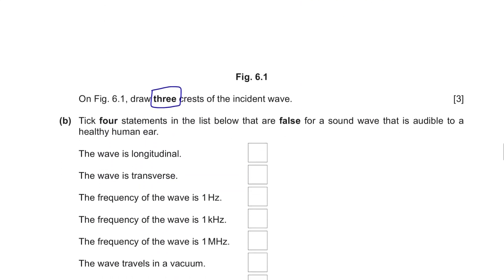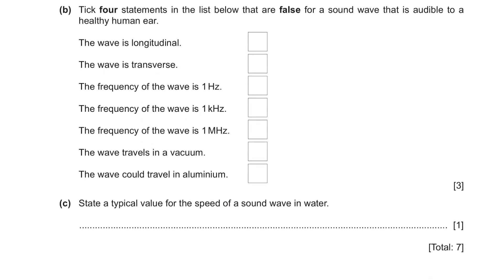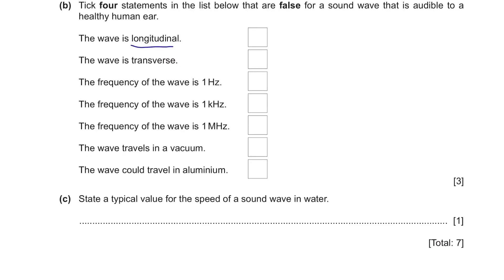Part B: Tick four statements in the list below that are false for a sound wave that is audible to a healthy human ear. Humans can hear longitudinal waves — sound waves are longitudinal, so it makes sense, so it's not false. But humans cannot hear transverse waves. Transverse waves are like electromagnetic waves, such as microwaves or radio waves — we can never hear those. So this is false.